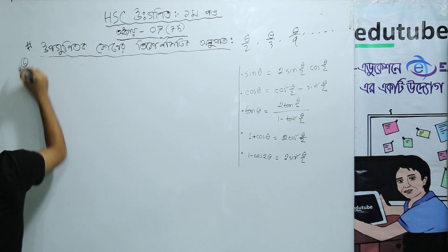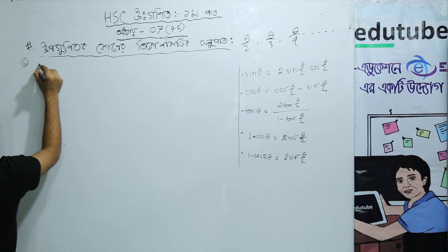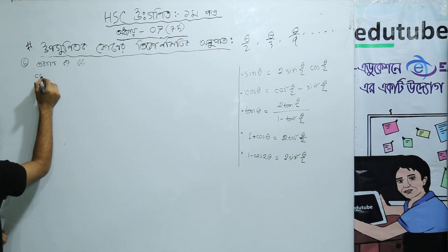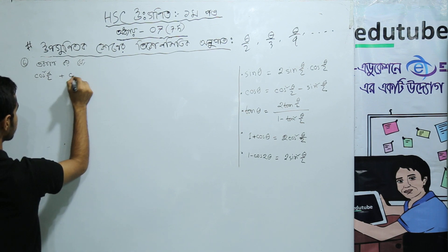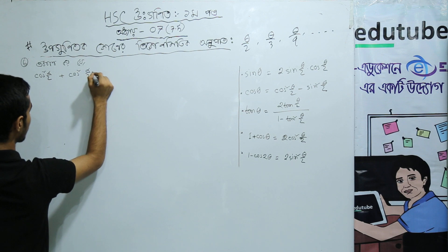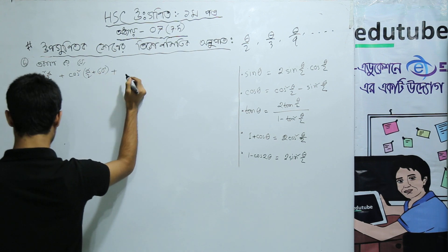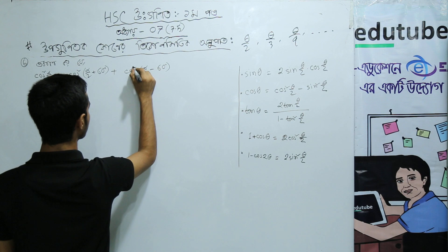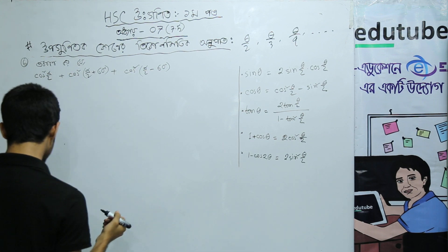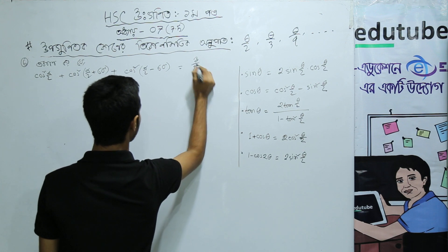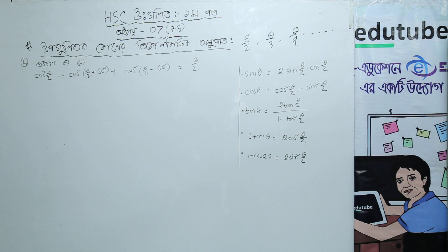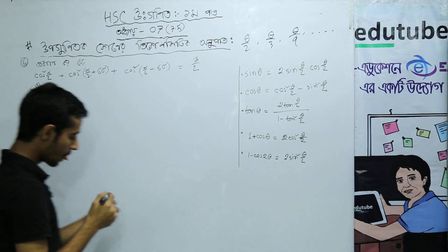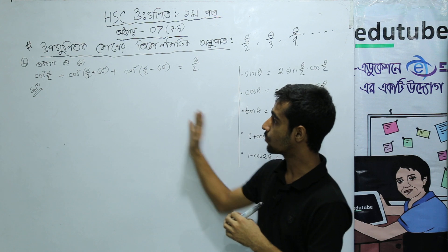Okay, so the next problem: prove that cos squared (alpha by 2) plus cos squared (alpha by 2 plus 60 degrees) plus cos squared (alpha by 2 minus 60 degrees) is equal to 3 divided by 2.